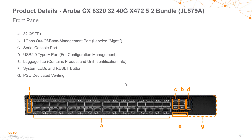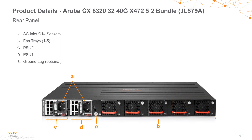On the 32-port model, you can see the 32 ports of 40 gig. There are RJ45 out-of-band and console ports on the right, as well as a USB Type-A port for configuration management. The luggage tag is on the right and the system LEDs are on the left. Looking at the back, the two power supplies are both positioned on the left, but it's the same overall setup — two power supplies and five fan trays, all coming pre-installed.